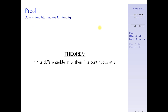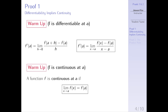This is the first statement that we're going to prove: if f is differentiable at a, then f is continuous at a. What do they mean by f is differentiable at a? What do they mean by f is continuous at a? We're going to study that first before we actually prove this theorem. Alright, as a warm-up, let's discuss what it means for f to be differentiable at a.